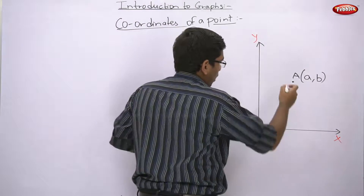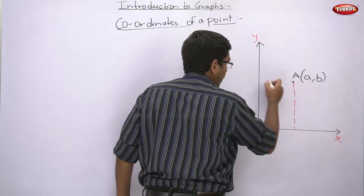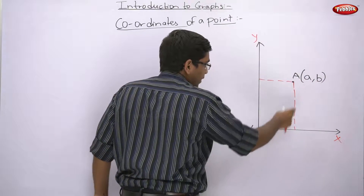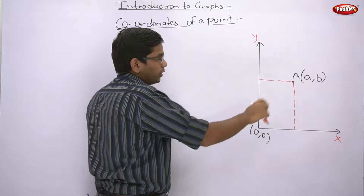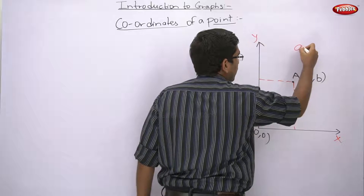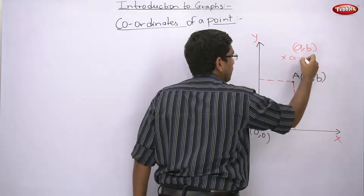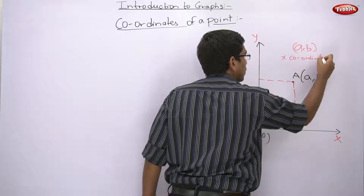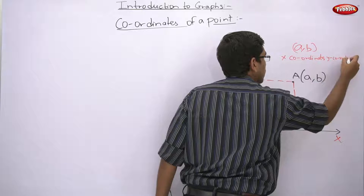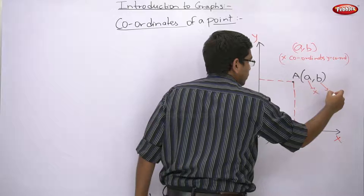Let us see how. I will make a vertical dotted line and a horizontal dotted line from point A. The origin is at a horizontal distance of small a and a vertical distance of small b. So (a, b) means x-coordinate is a and y-coordinate is b. Here, a is your x-coordinate and b is your y-coordinate.